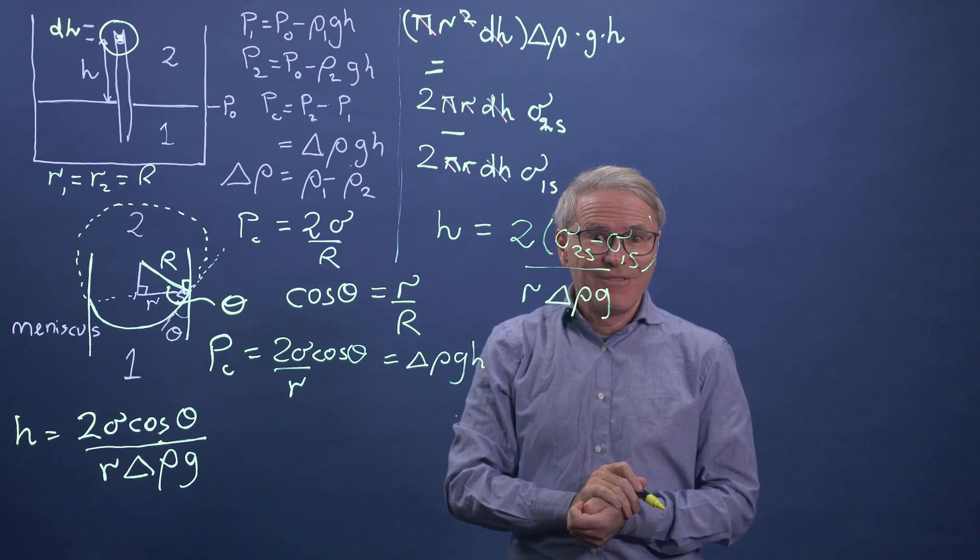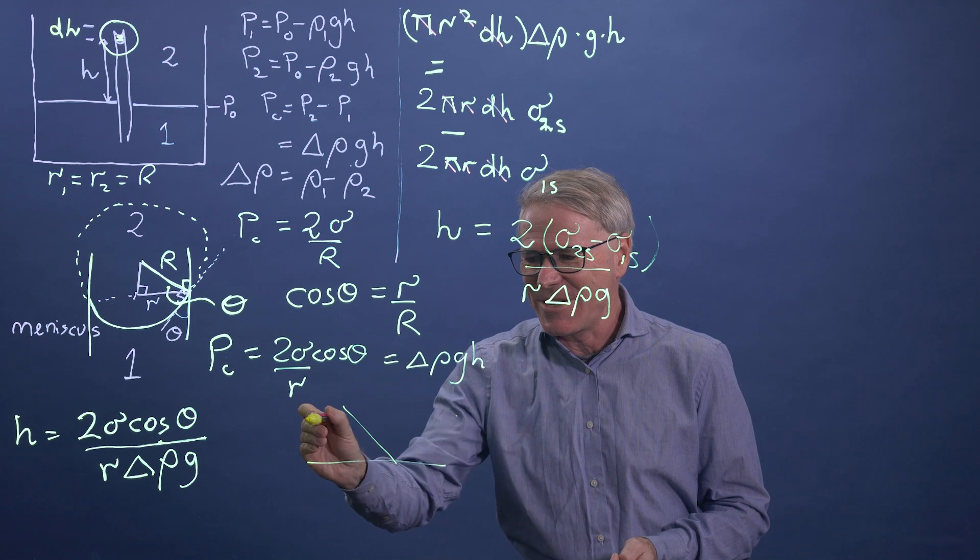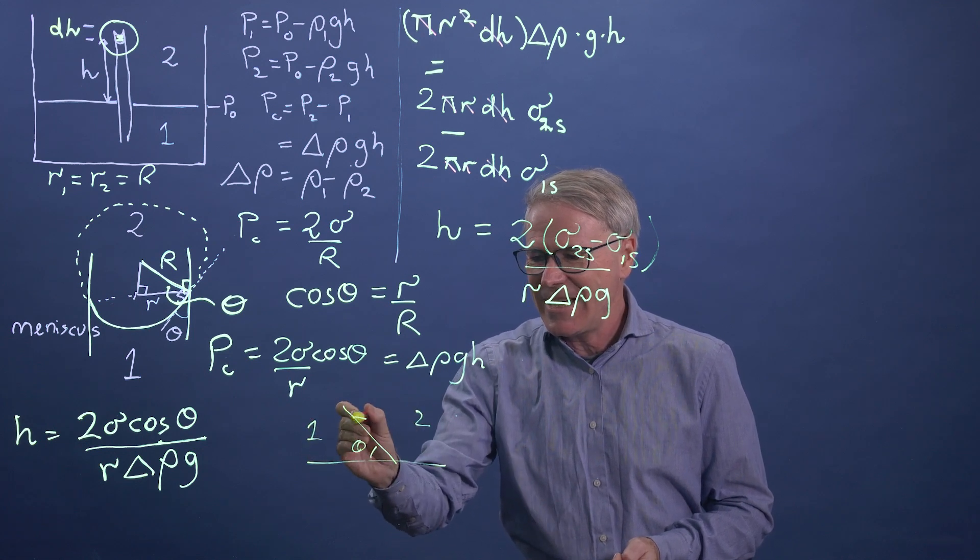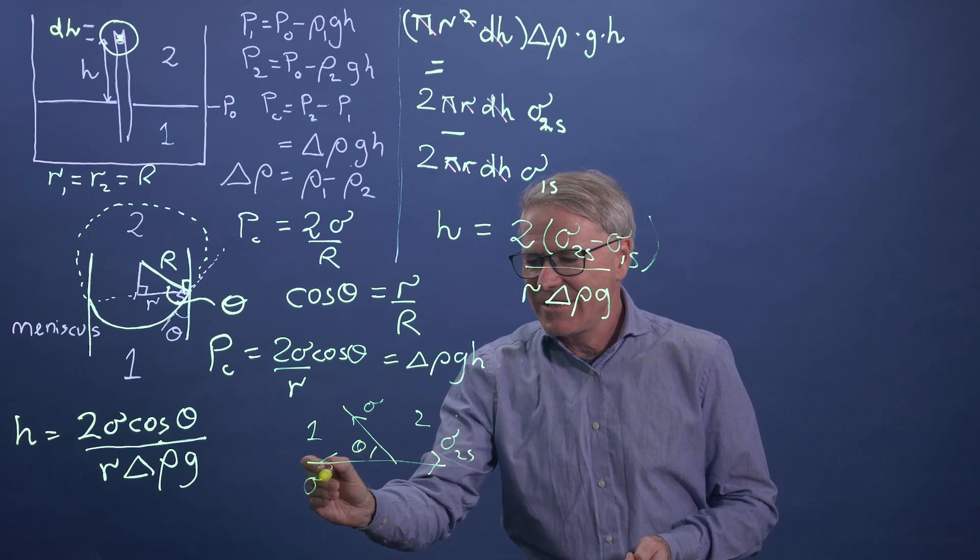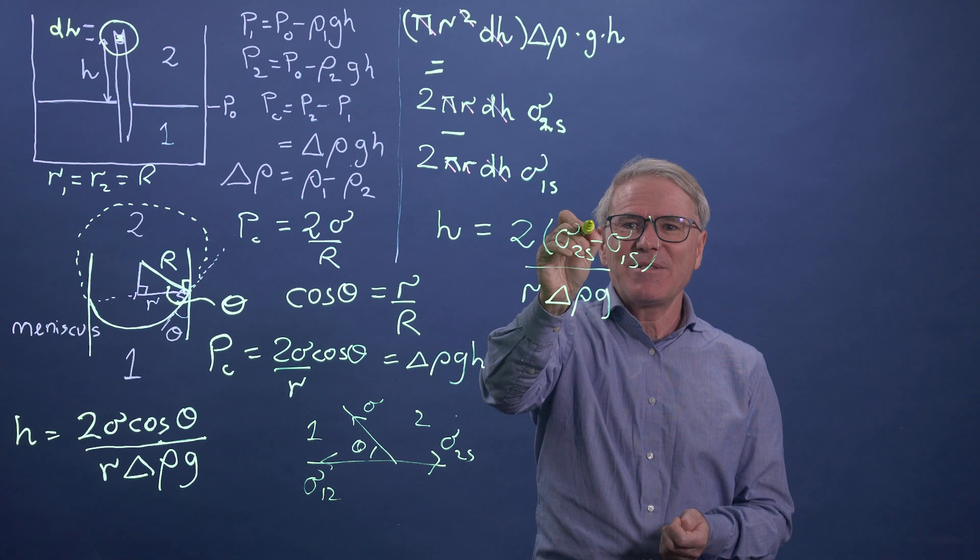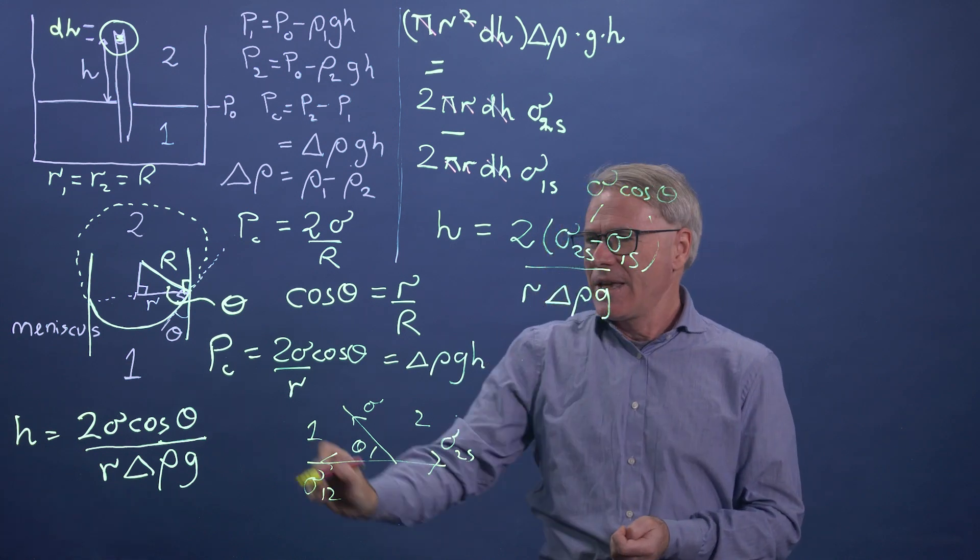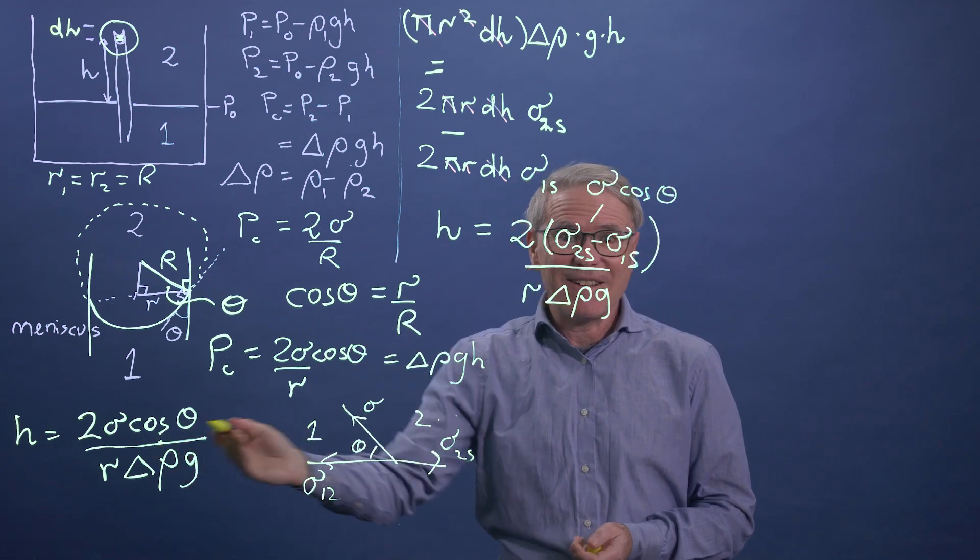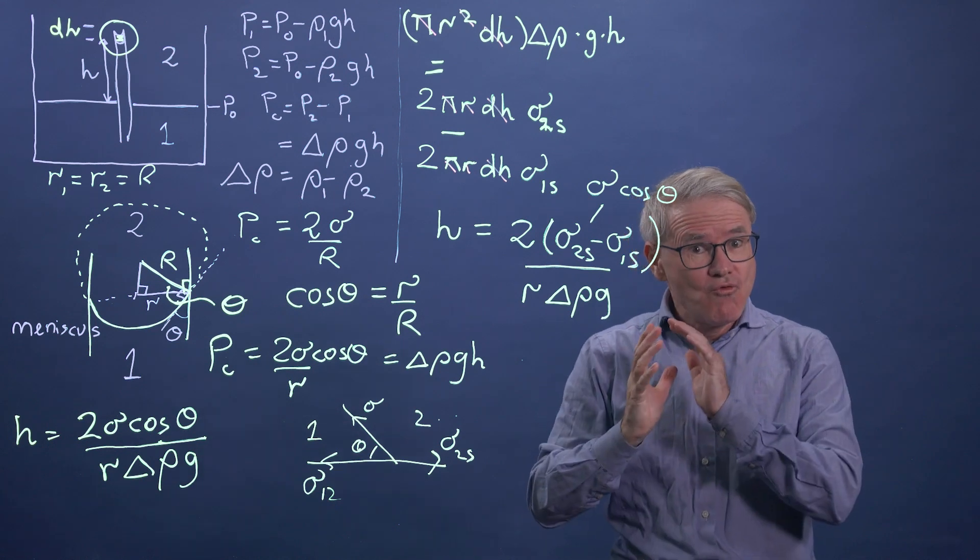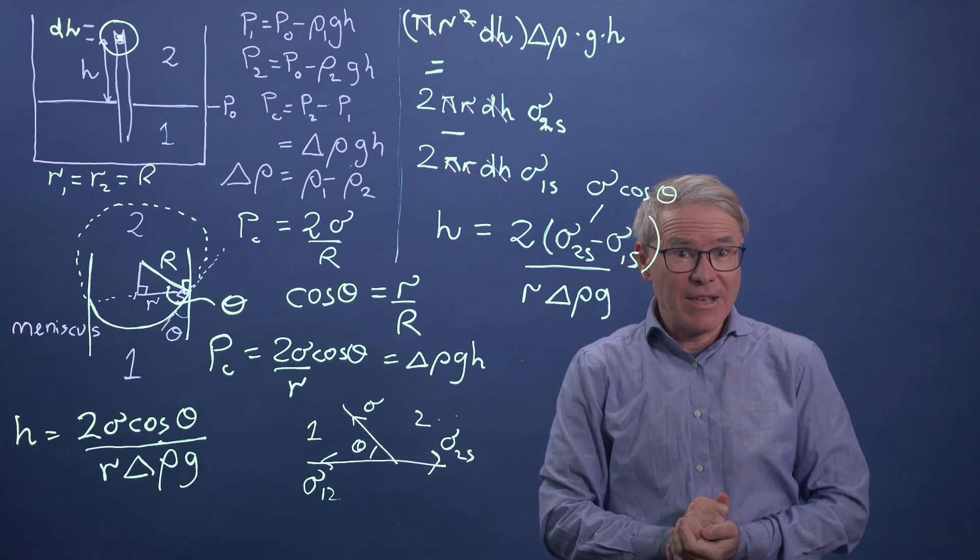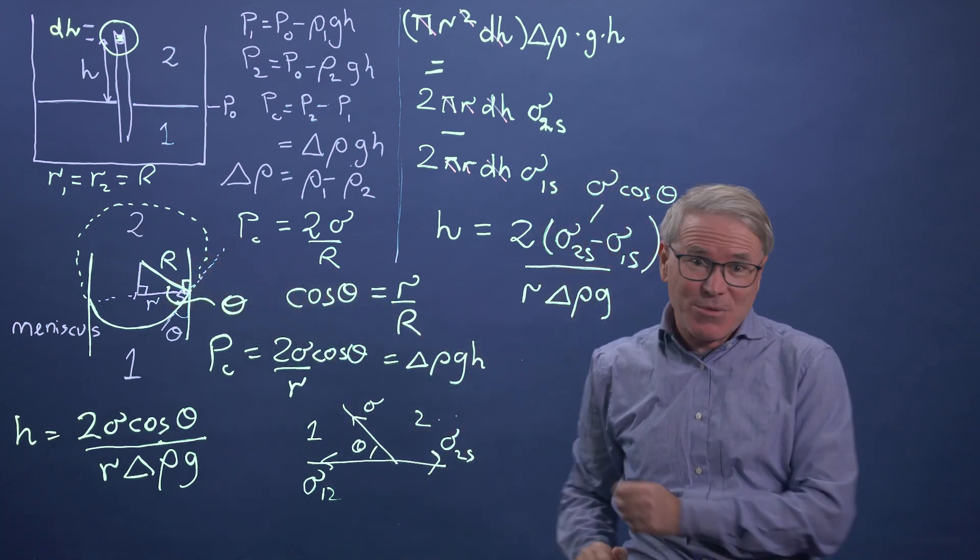But hang on, what about the Young equation? Just remember that Young equation again, phase one, phase two, theta here, sigma, sigma 2s, sigma 1s. Sigma 2s minus sigma 1s is just sigma cos theta. And lo and behold, I get the same equation here. So we can derive this equation both directly from energy balance and then using the Young equation or doing a bit of geometry with Young-Laplace, which is a bit strange. You know, you think cosines and circles have nothing to do with just an energy balance, but the two give you the same behavior.